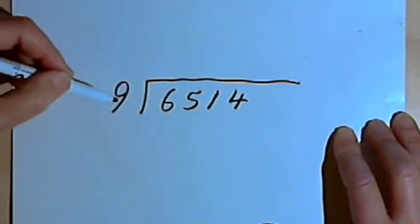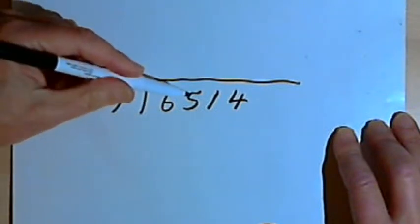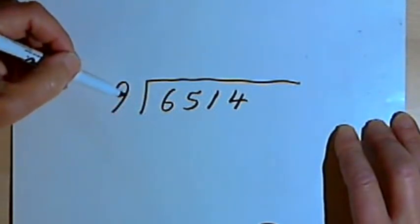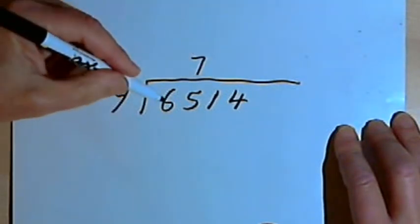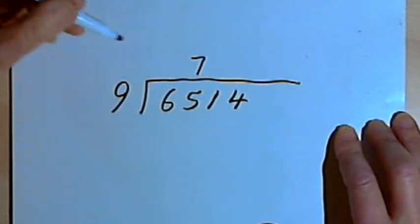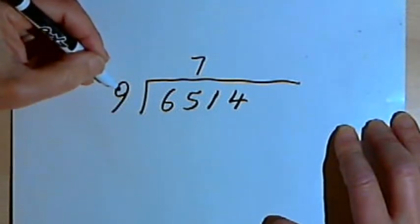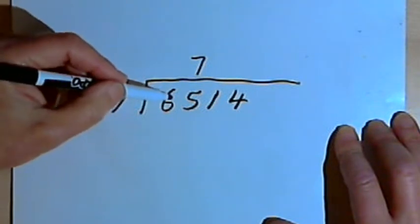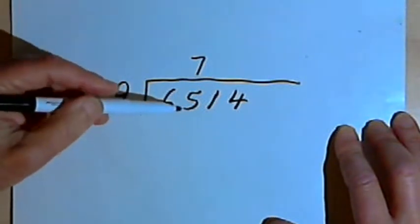So 9 does not divide into 6. We'll have to divide 9 into 65. 7 times 9 is 63. So 9 would go into 65 7 times. Then I'm multiplying 7 times 9. That was 63. In my head I'm subtracting 65 minus 63, which means 2.